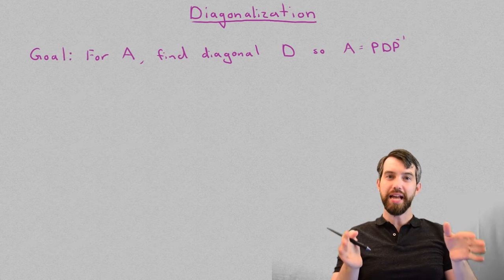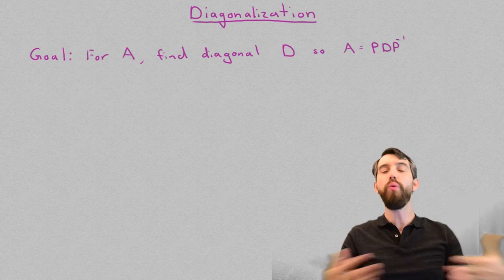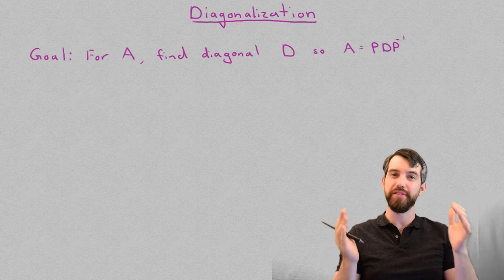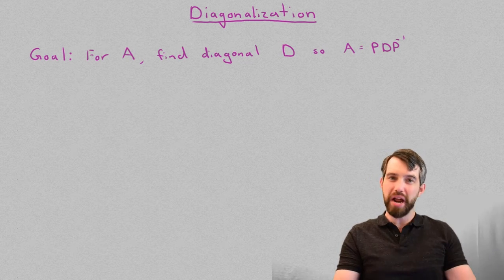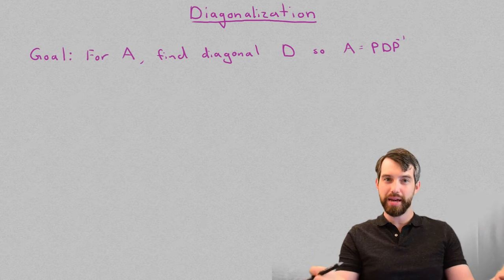We've previously seen that diagonal matrices are really nice. It makes a whole wide range of linear algebra problems trivial and easy to solve if it's diagonal. But diagonal matrices are relatively rare. Most matrices you're ever going to encounter are not diagonal. So what can we do in that case?